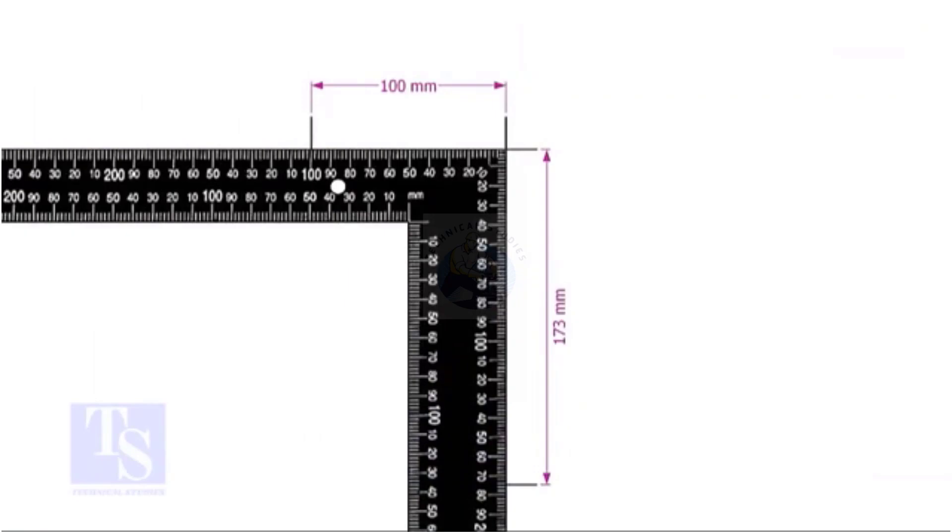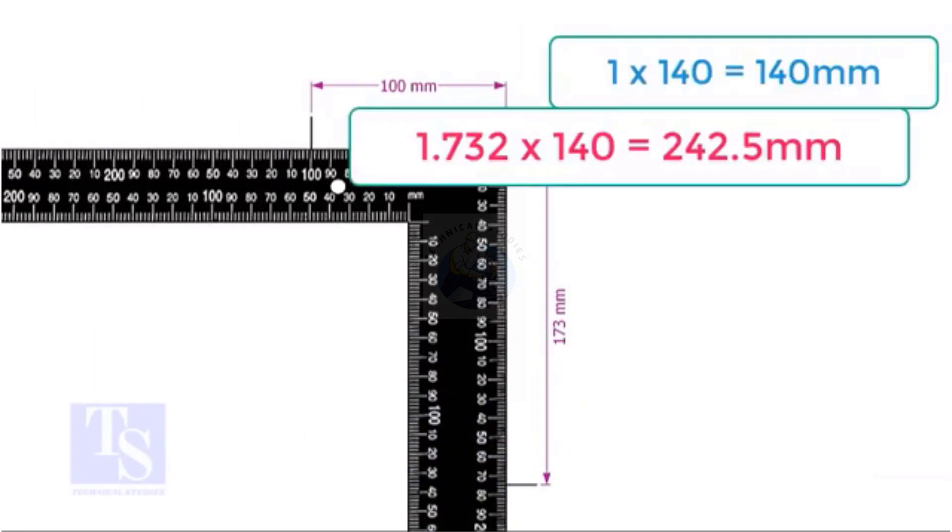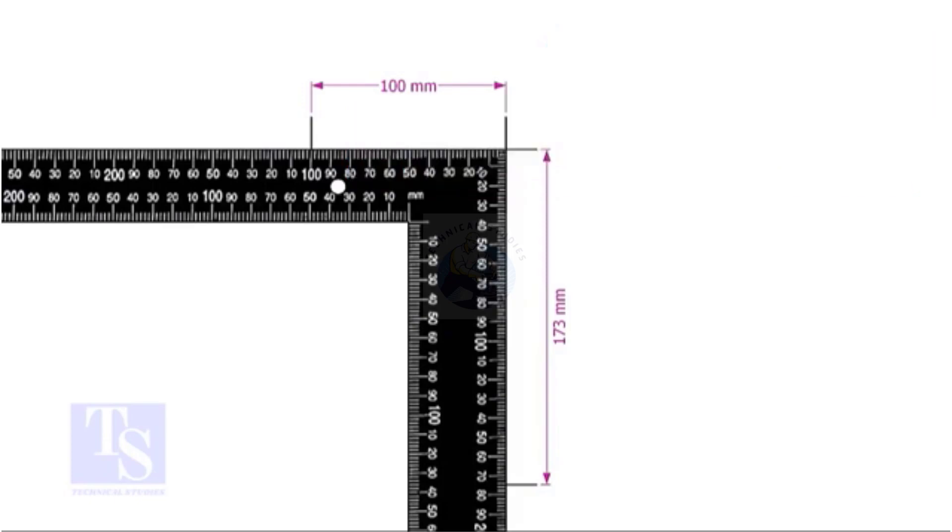You can choose any number, for example, if you choose 140, multiply 1 by 140 and multiply 1.732 by the same number. Mark the sums of the multiplications on the right angle as shown.